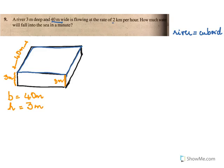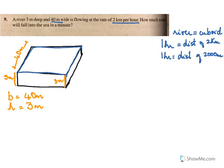The river is flowing at 2 kilometers per hour, which means in 1 hour it covers a distance of 2 kilometers. We know 2 kilometers is 2,000 meters, so in 1 hour this river will cover a distance of 2,000 meters.